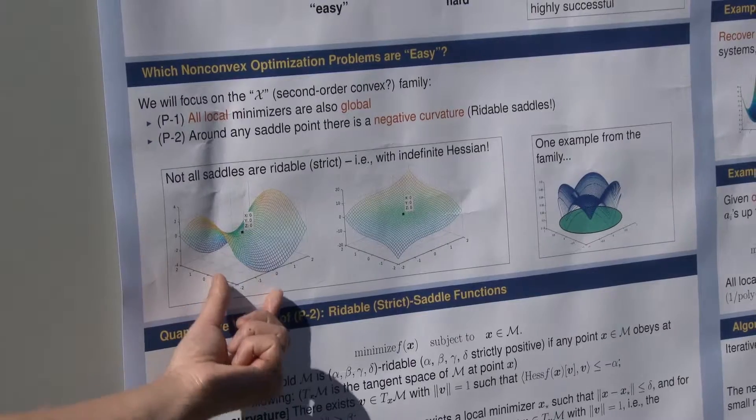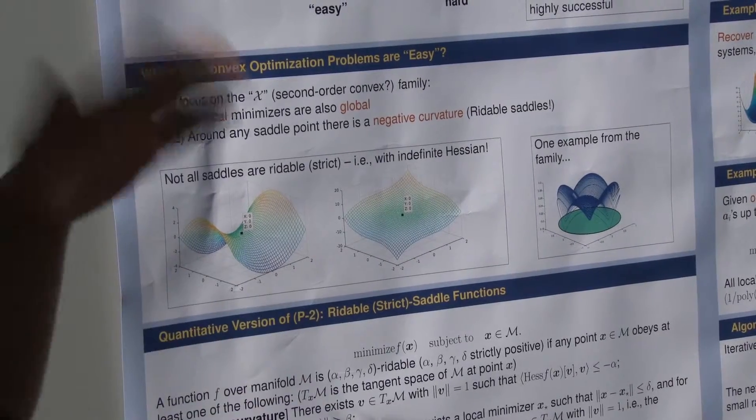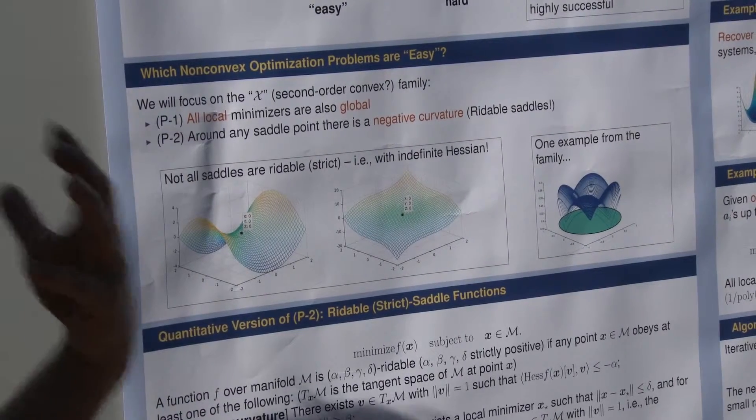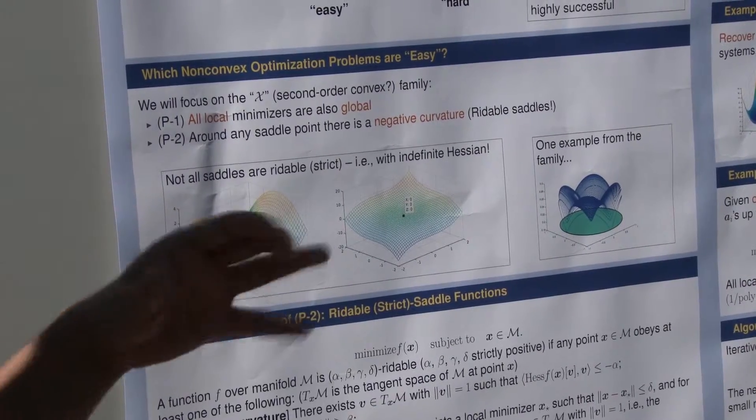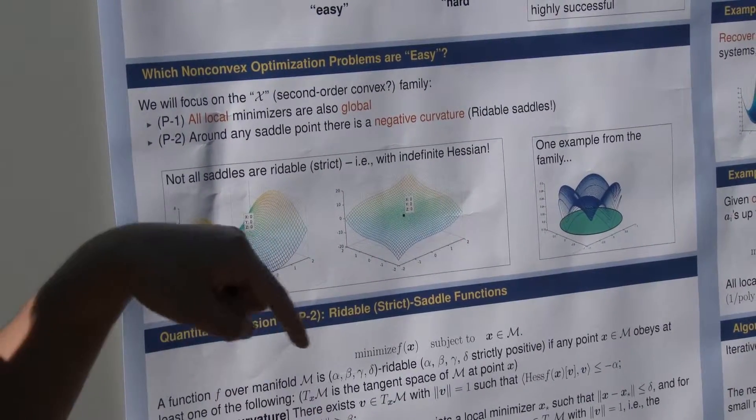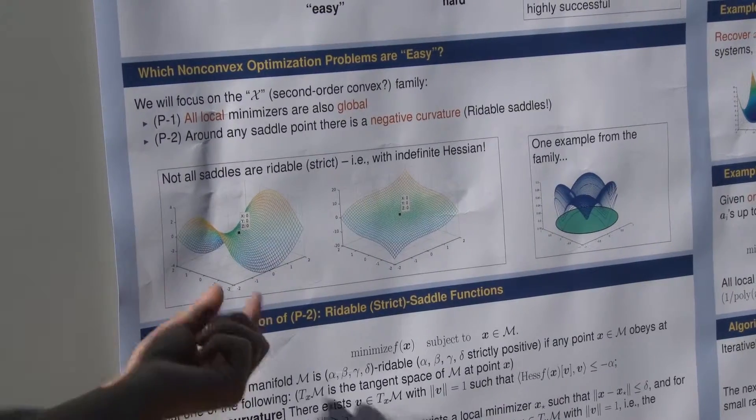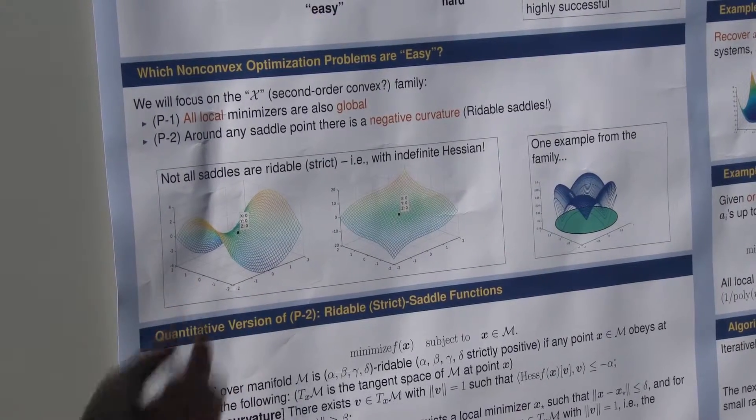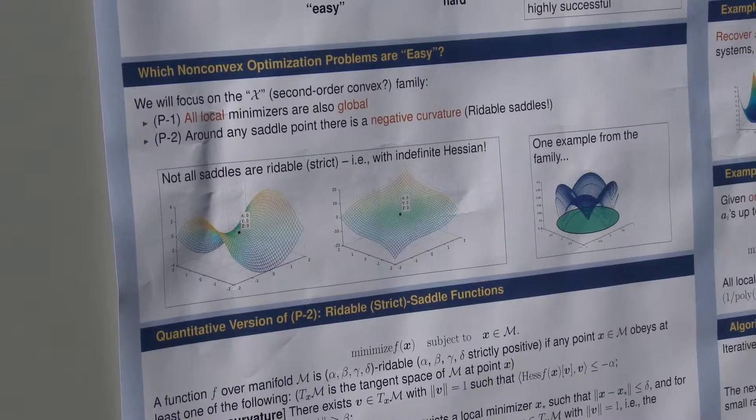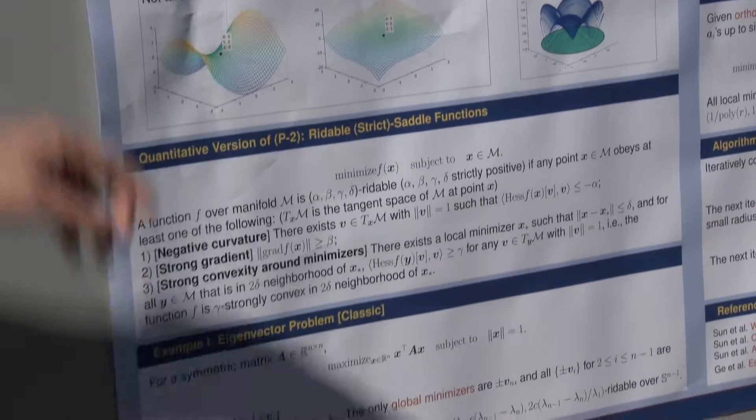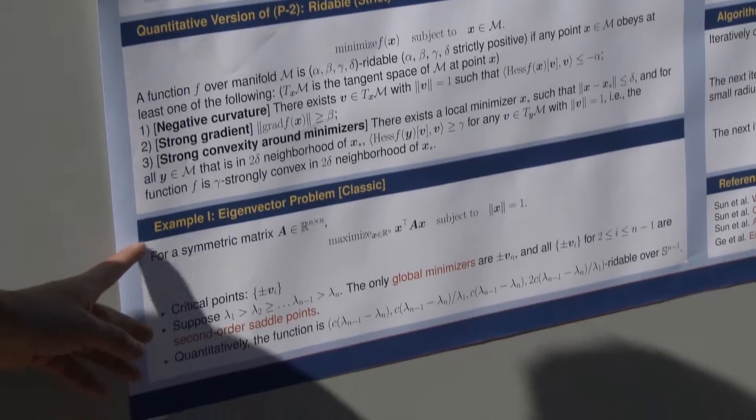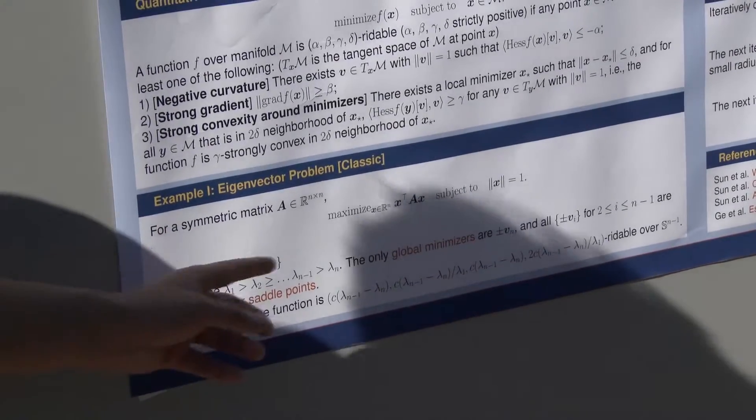The reason that we look at this kind of saddle point is that if you think of a typical second-order method, you can cook up a local second-order model and try to decrease the function value. That means you won't stay on the saddle point if you use second-order method. The first example that has this kind of structure is very classic. That's the eigenvector problem.